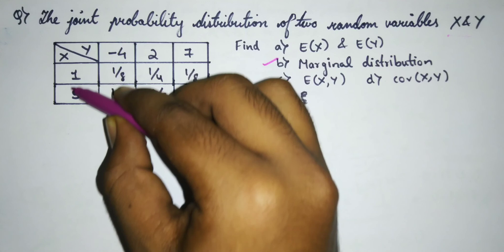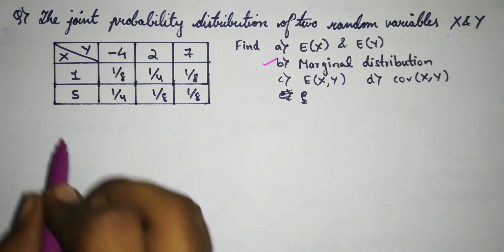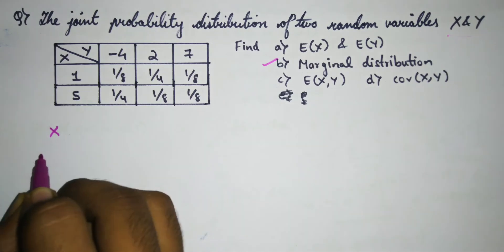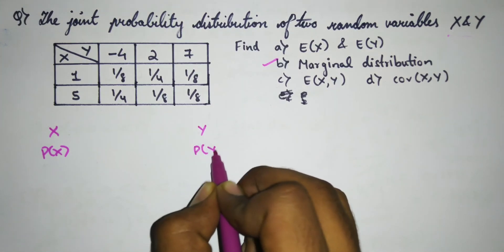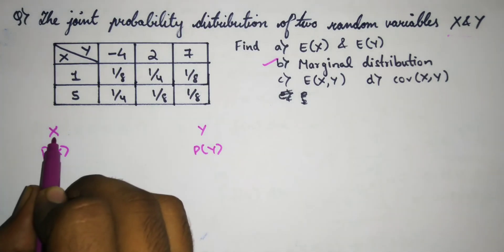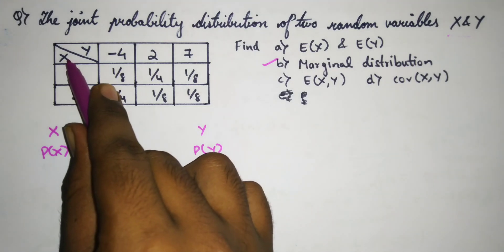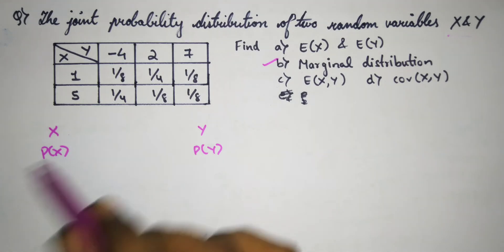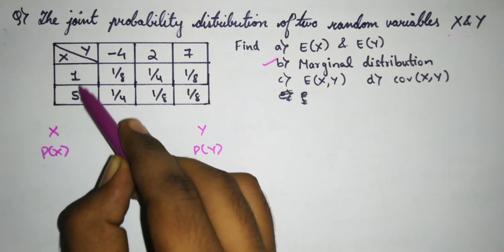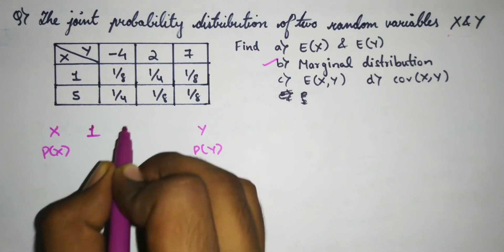The X values are 1 and 5. Marginal distribution is nothing but the sum — we write X and P(X), as well as Y and P(Y). We're dividing the joint probability distribution table into two categories: one for X and one for Y. So in the marginal distribution table, we write X and P(X), where X values are 1 and 5.